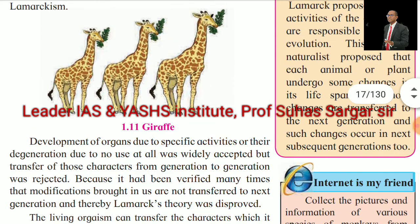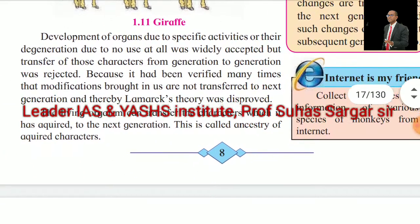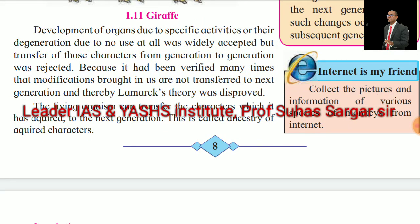See the pictures of the giraffe. Development of organs due to specific activities or their degeneration due to disuse was widely accepted; however, the transfer of those characters from generation to generation was rejected. It had been verified many times that modifications acquired in one's lifetime are not transferred to the next generation, and thereby Lamarck's theory was disapproved.